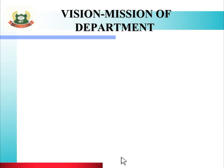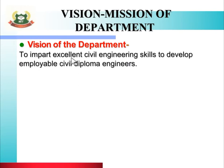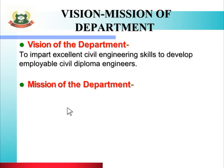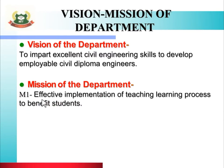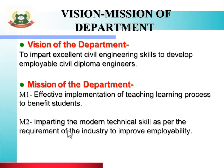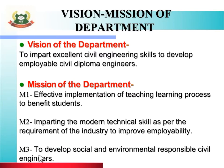First let us see the Vision and Mission of the Department. The Vision of the Department is: to impart excellent Civil Engineering skills to develop employable Civil Diploma Engineers. To achieve this vision, there are three missions. Mission one: Effective Implementation of Teaching Learning Process to Benefit Students. Mission two: Imparting the Modern Technical Skill as per the Requirement of the Industry to Improve Employability. Mission three: to develop Social and Environmental Responsible Civil Engineers.